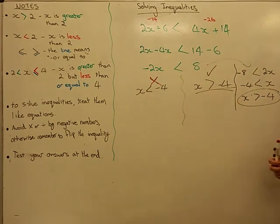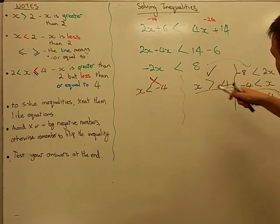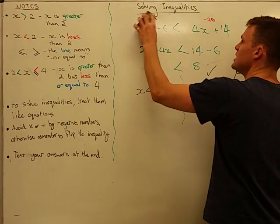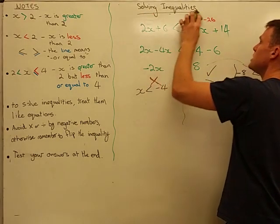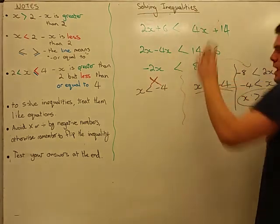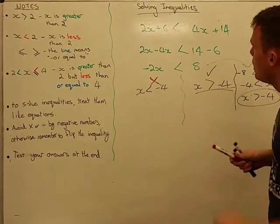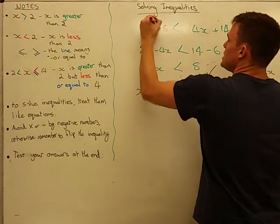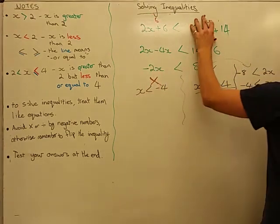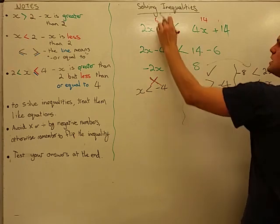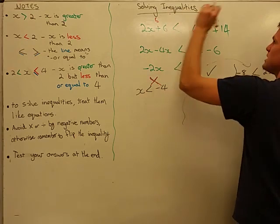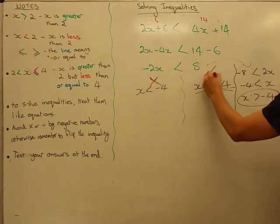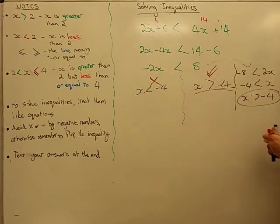Let's test the correct answer — I want a number bigger than negative 4, so let's pick 0. 0 plus 6 is 6, and 0 plus 14 is 14. 6 is less than 14. Correct.